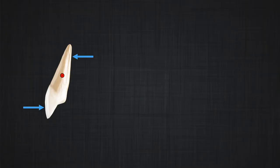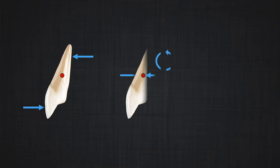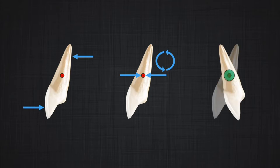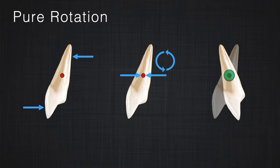What will happen if we apply two forces at the same time — equal in magnitude, parallel to each other, and opposite in direction? Yes, we have a couple. As you remember from the couple discussion, there would be no displacement in the system, just pure rotation. Therefore we are expecting the center of rotation to be exactly on the center of resistance, and that doesn't move in space.